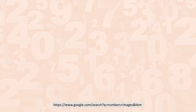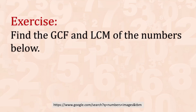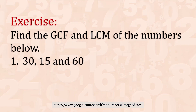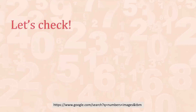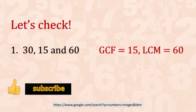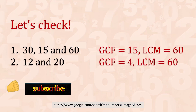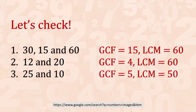Now it's your turn. Get ready with your paper and pen. Find the GCF and LCM of the numbers below. Number 1: 30, 15, and 16. Number 2: 12 and 20. Number 3: 25 and 10. Let's check. For number 1, 30, 15, and 16: the GCF is 15 and the LCM is 16. For number 2, 12 and 20: the GCF is 4 and the LCM is 60. For number 3, 25 and 10: the GCF is 5 and the LCM is 50.